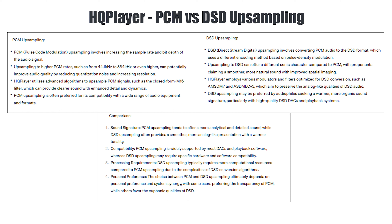We will compare how PCM and DSD upsampling are different. PCM, or Pulse Code Modulation, involves increasing the sample rate and the bit depth of the audio signal, whereas DSD, or Direct Stream Digital, involves converting the PCM signal to a DSD format and uses a different encoding method based on Pulse Density Modulation. DSD upsampling can offer a different sonic character compared to PCM. PCM upsampling tends to offer a more analytical and detailed sound, while DSD upsampling provides a smoother, more analog-like presentation with a slightly warmer tonality.